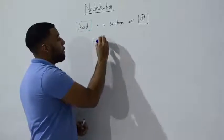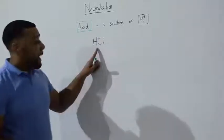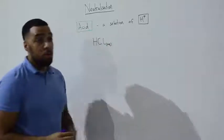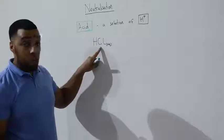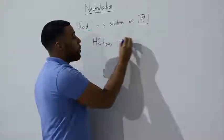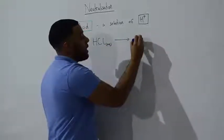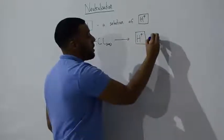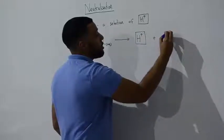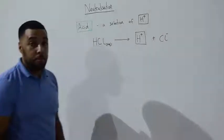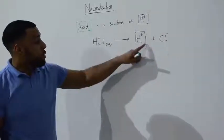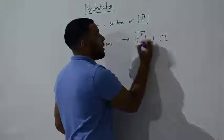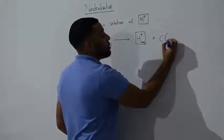For example, hydrochloric acid. We would give it a state symbol AQ. Because when hydrogen chloride dissolves in water, it produces a hydrogen ion and it also produces a chloride ion. Both of these ions are soluble, so they're aqueous. They're in this solution.